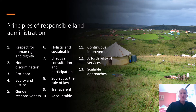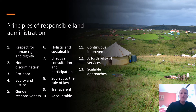The GLTN has proposed 13 principles of responsible land administration that should be embedded in national land policies. The first five concern recognition and respect for all people regardless of gender, race, age, ethnicity or any other quality: respect for human rights and dignity, non-discrimination, pro-poor, equity and justice, and gender responsiveness. The next five concern the way rules and regulations making up land administration processes are derived — they should be holistic and sustainable, based on effective consultation and participation, subject to the rule of law, transparent and accountable. The last three concern sustainability: responsible land administration requires continuous improvement, affordability of services, and scalable approaches.